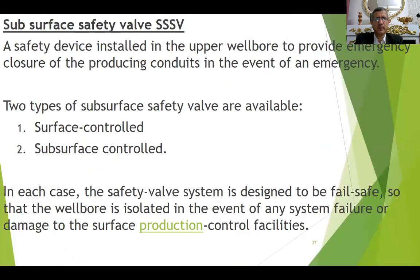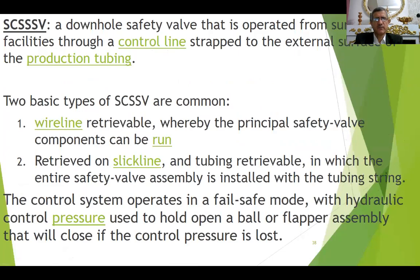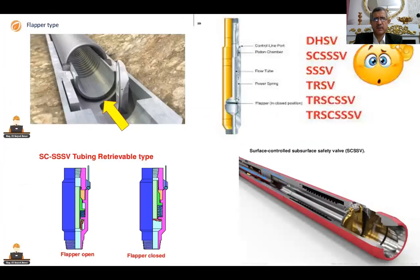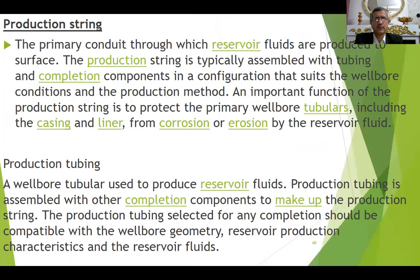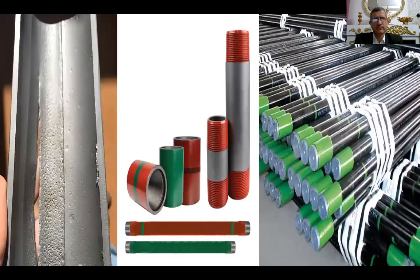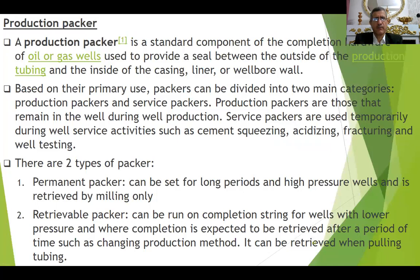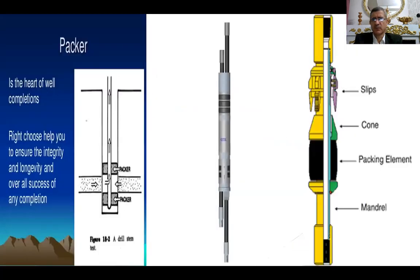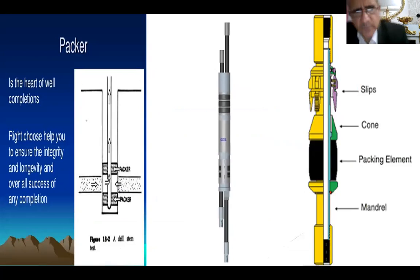Here we have the tubing hanger, and here the surface safety valve — the types and mechanism. What we call a production string — we produce through it from the reservoir to the surface, or vice versa for injection. This is the tubing. Then the packer. The function of the packer is to isolate the casing from the formation and to isolate the producing fluids or treatment fluids from the casing.